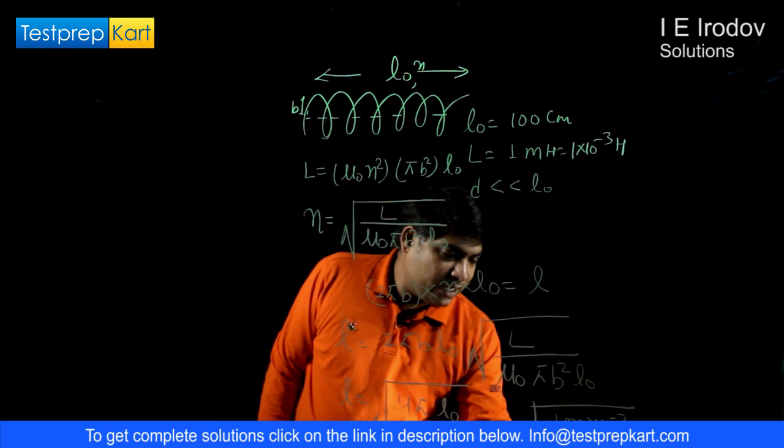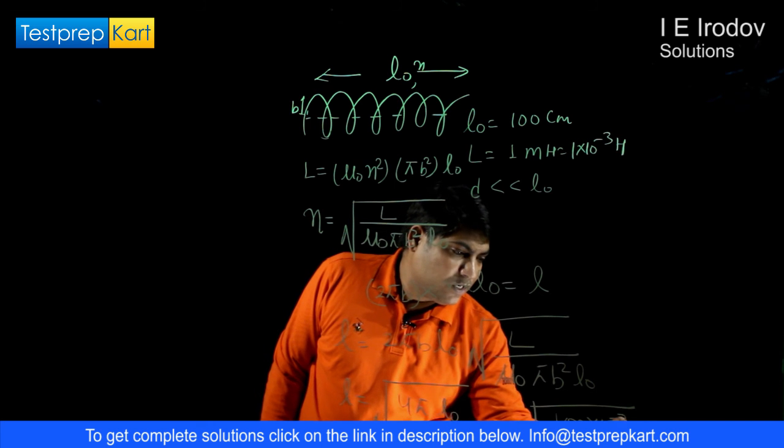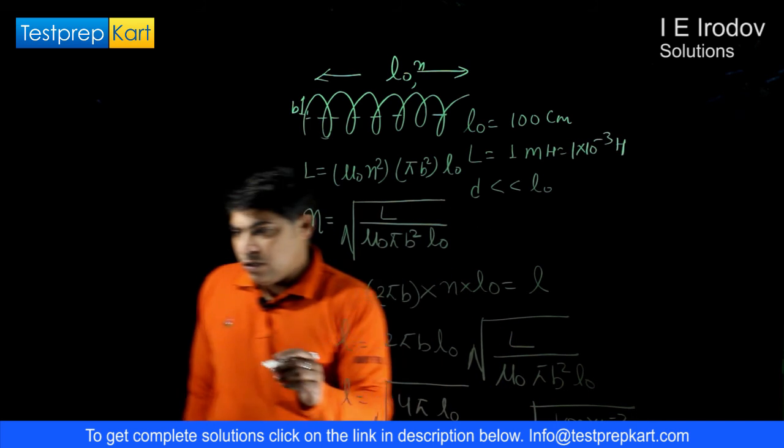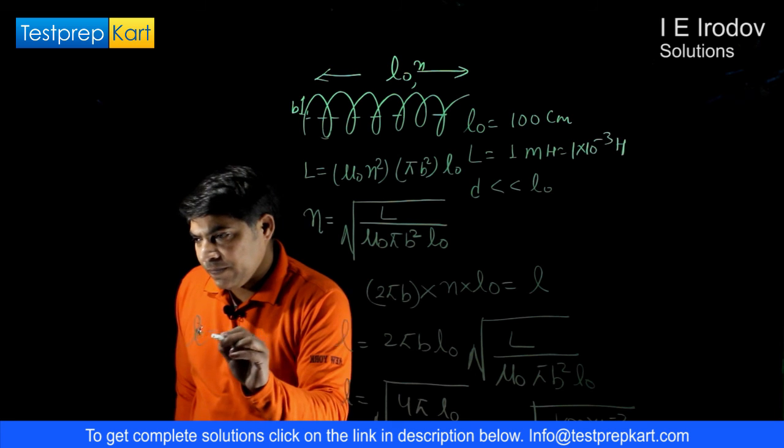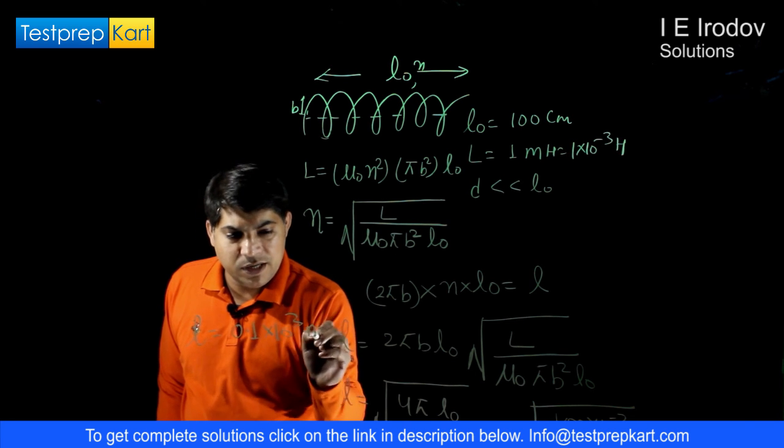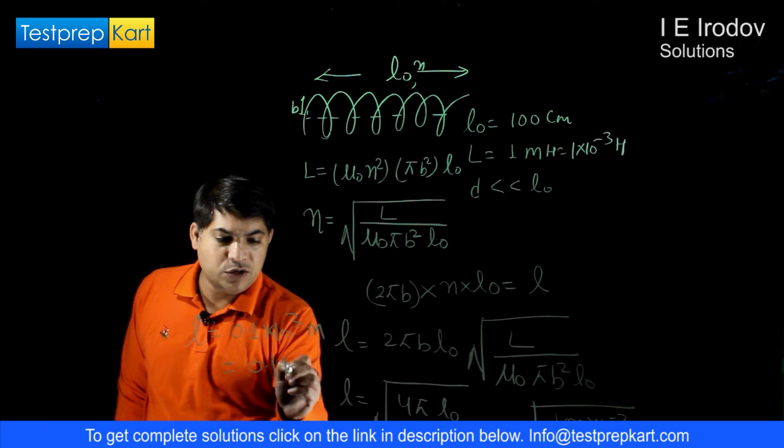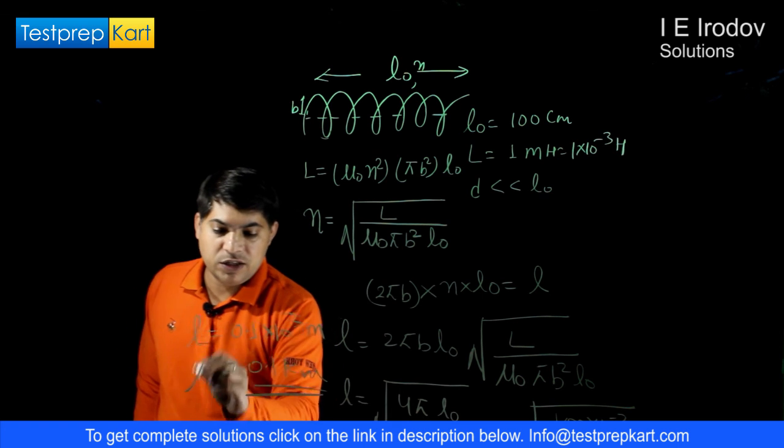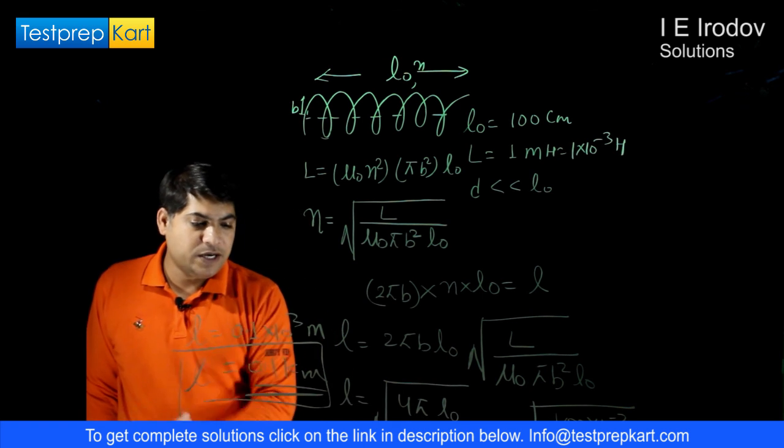So from here we will get the length 0.1 × 10³ meters, or we can say 0.1 kilometers. So length of this wire is 0.1 kilometer.